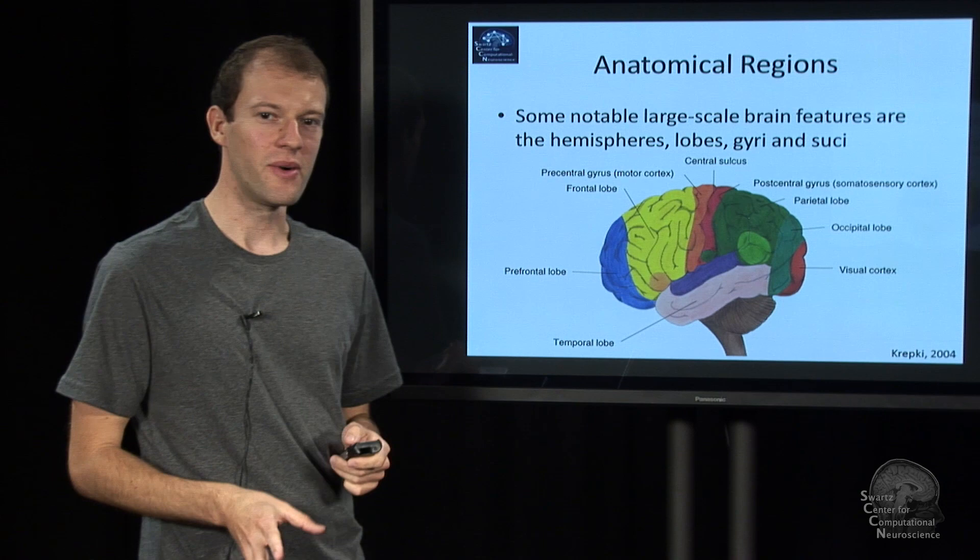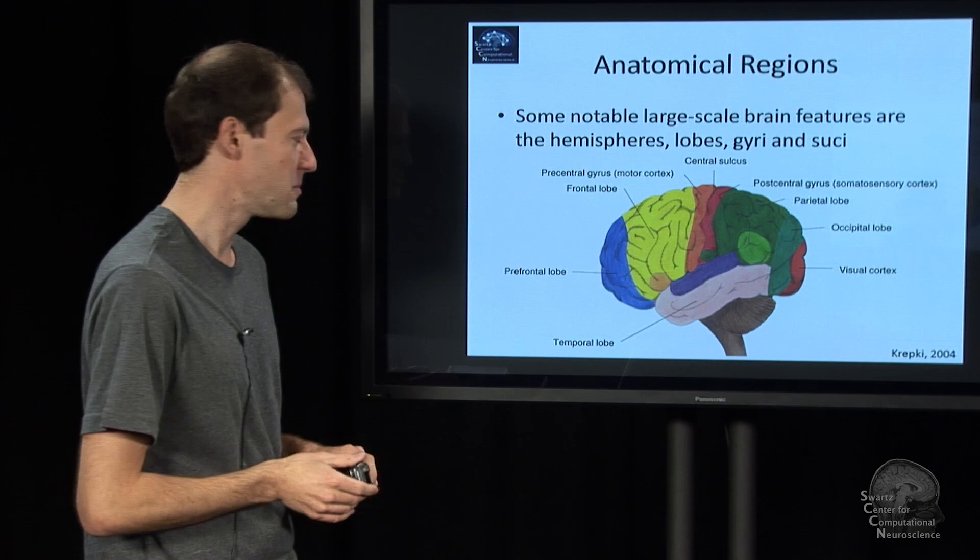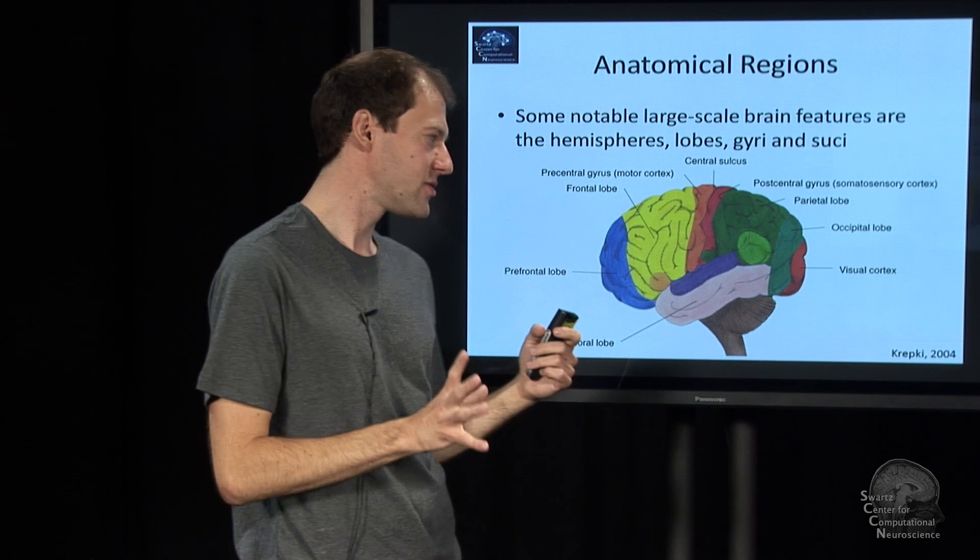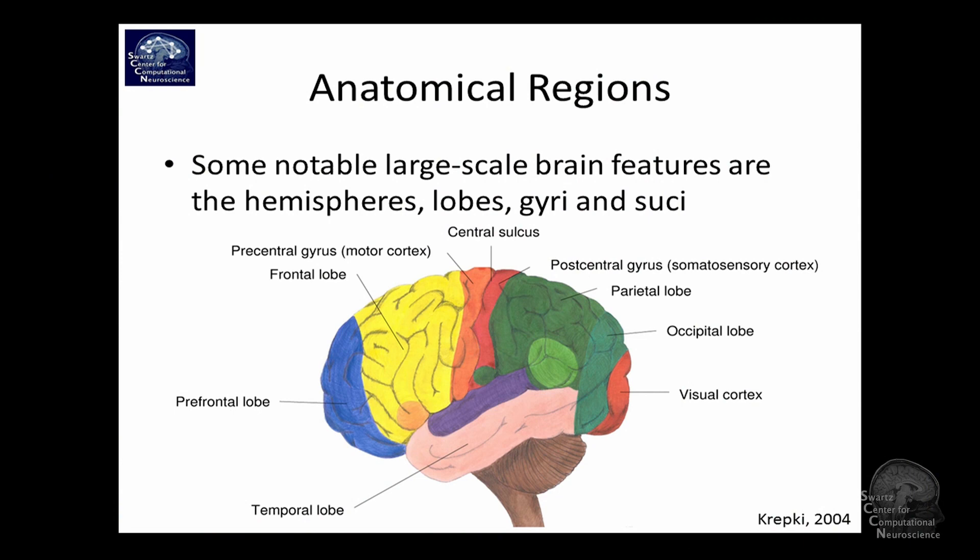And at the very coarse scale, this is not going to be new for any cognitive scientist or psychologist, but maybe for an engineer, at the coarse possible scale you can assign different kinds of functions to various parts of the brain. And that is mostly because there are certain kinds of nerves ending at certain parts of the brain.